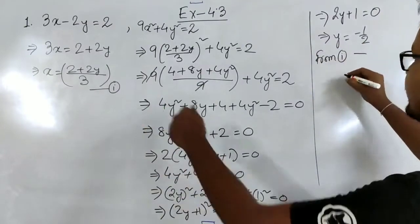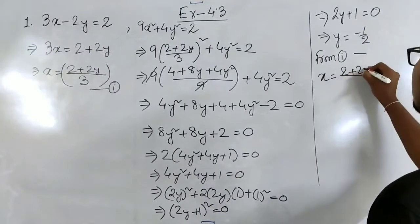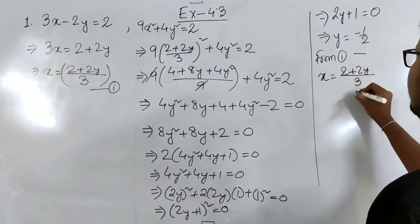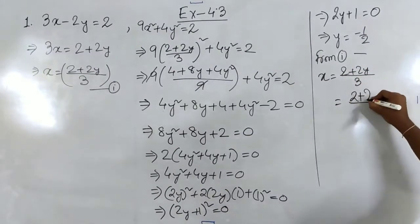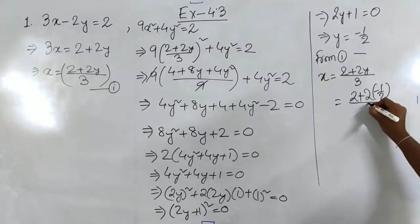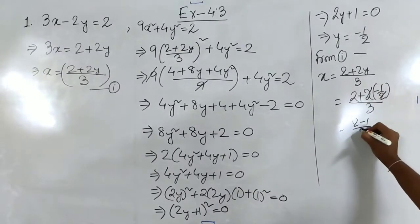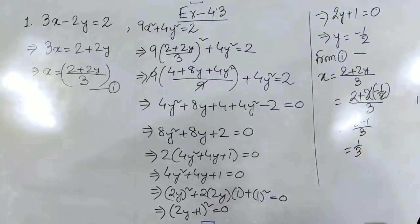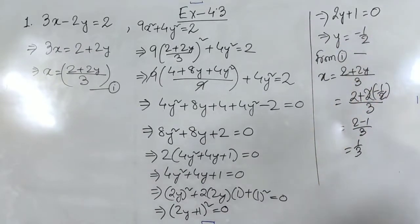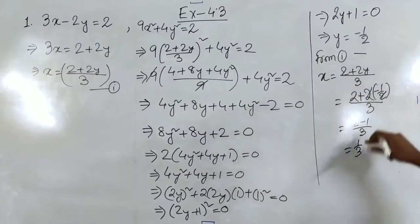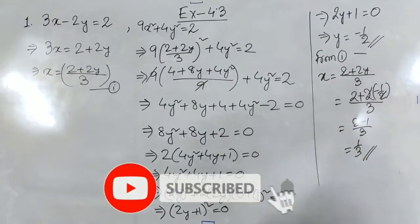From equation 1, x is equal to (2 plus 2y) by 3. Putting y equal to minus 1/2: it is (2 plus 2 times minus 1/2) by 3. The 2s cancel, giving (2 minus 1) by 3, which is 1 by 3. So we have found x equal to 1/3 and y equal to minus 1/2.